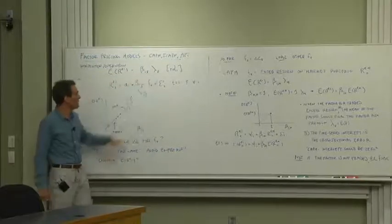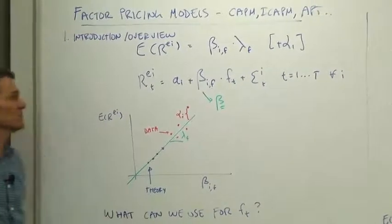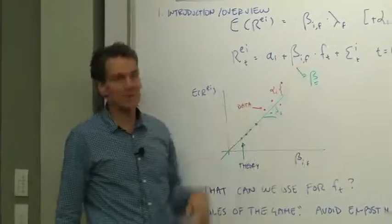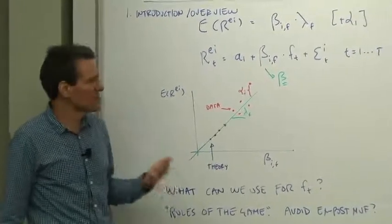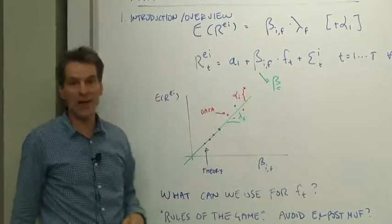We use the letter alpha for deviations for expected returns that are too high or too low. The betas, to remind you, come from time series regression. If you're going to check this, you do two steps: first, run a return on the factor to obtain the betas.